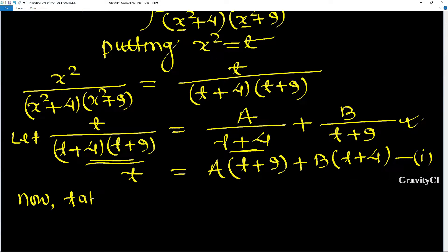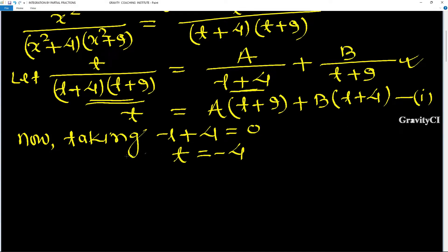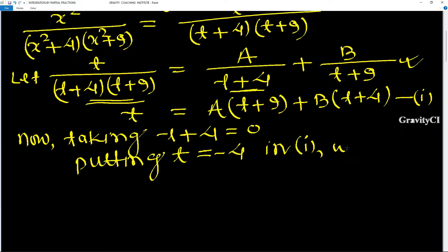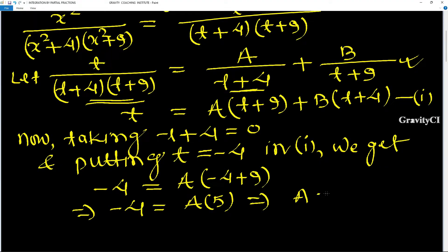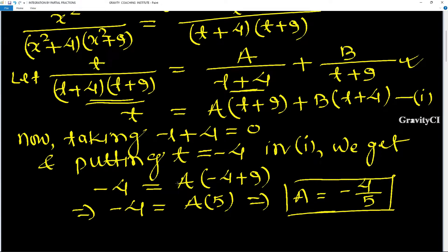To find the value of A, we take t+4 equal to 0, so t equal to minus 4. Putting t equal to minus 4 in equation first, we get: minus 4 = A(minus 4 + 9), so A equal to minus 4 by 5.